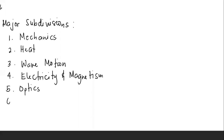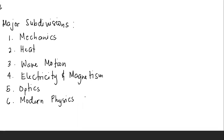Number six, the last major subdivision, is modern physics. This begins with Einstein's theory of relativity and the discoveries of x-rays, radioactivity, the electron, and the transformation of quantum theory.